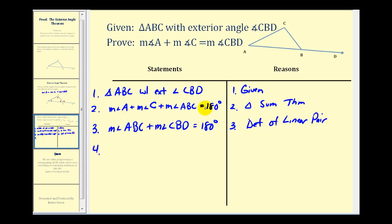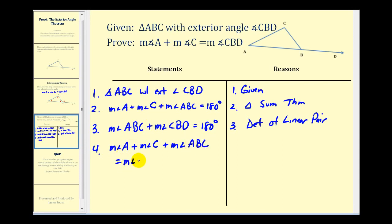Now because both of these equations are equal to 180 degrees, we can use the transitive property to state the measure of angle A plus the measure of angle C plus the measure of angle ABC would have to be equal to the measure of angle ABC plus the measure of angle CBD. This is the transitive property.